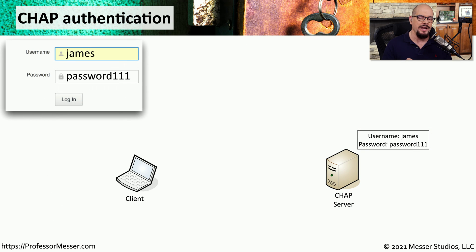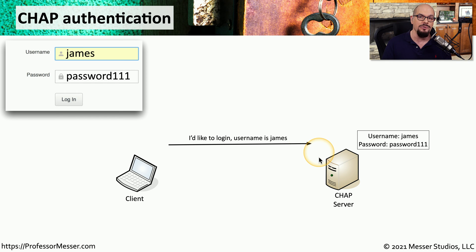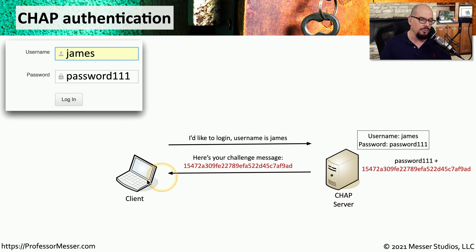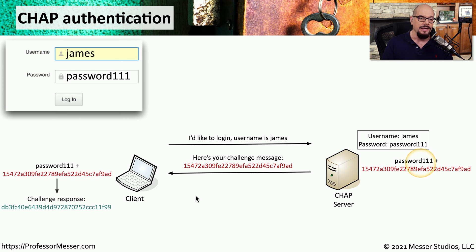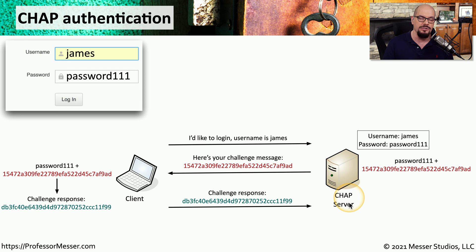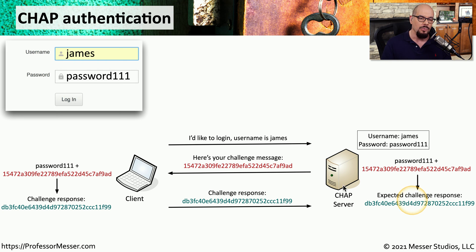Using the same scenario with the Challenge Handshake Authentication Protocol — username James, password password111, client and server — the client sends a request to log in with the username James. The server already knows the username James and its password. The server takes that password, combines it with a challenge, and sends that challenge across the network to the client. The client performs the same combination of password and challenge, then sends back a response. That challenge-response hash is sent over the network to the CHAP server, which does its own calculation to verify the response matches. Notice that with CHAP, we're not sending the password in the clear — only a challenge or response, neither of which contains the actual password.